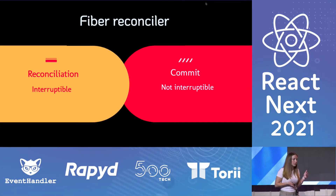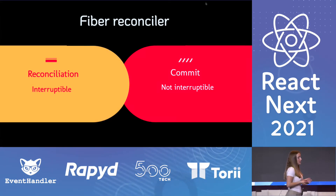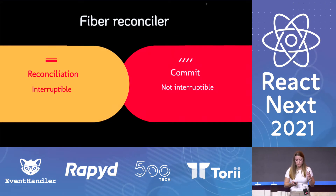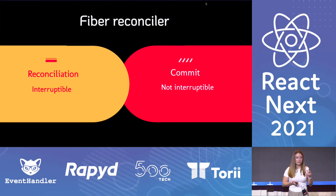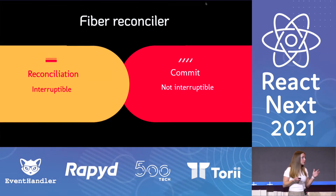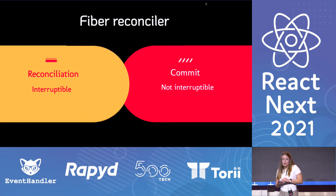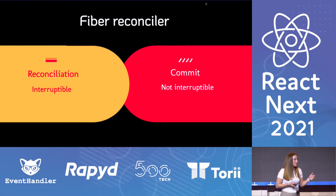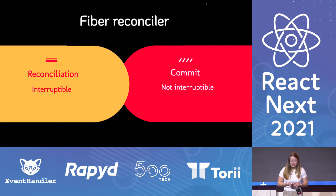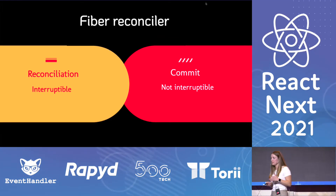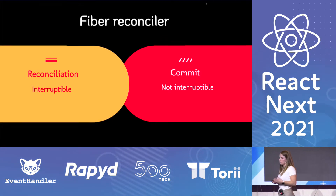Then they introduced the fiber reconciler. What was special about it is that it had two phases. One phase was the reconciliation phase — and this is the phase that we were able to interrupt, and we still can. Remember this, because I'll get back to it later. And the commit phase, which is not interruptible. This allowed React to not block the main thread anymore while JavaScript was executing.